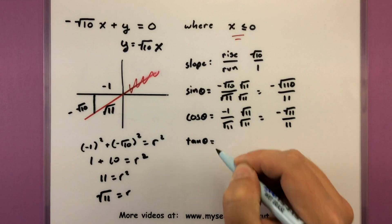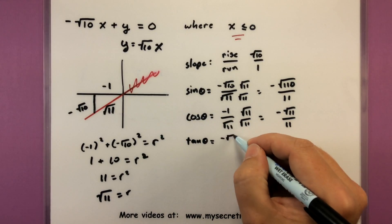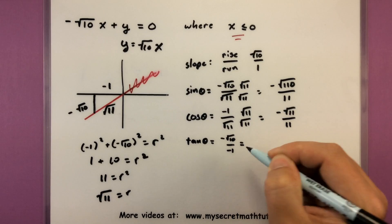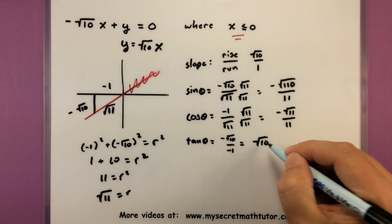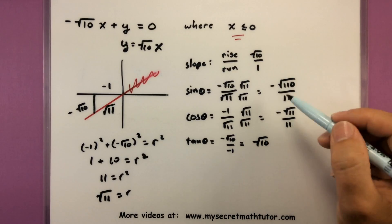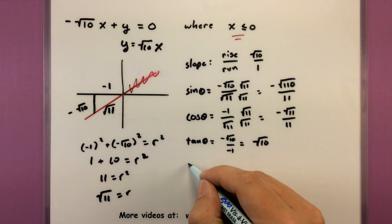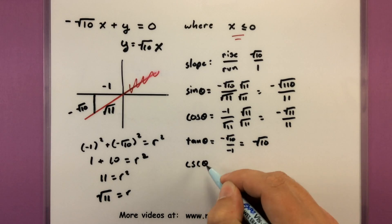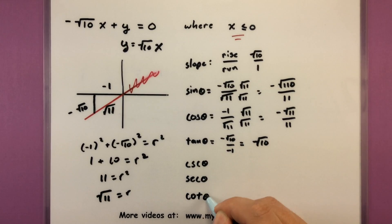The next big one, tangent. That'll be our opposite over adjacent. Not too bad. The only thing we have to cancel here looks like a couple of negative signs. This will give us a positive square root of 10. So there's our first three big trigonometric functions. Now, as you remember, the next three are almost freebies. All you got to do is flip the first, so let's go ahead and do that. Cosecant, secant, and cotangent.